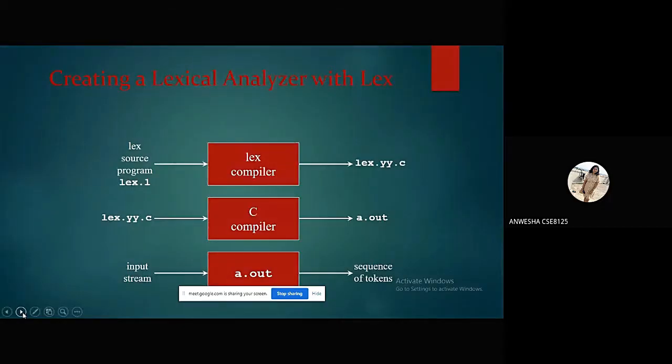We are looking at how to create a lexical analyzer with lex. This is how a lexical analyzer is created. First, the lex source program, for example, lex.l, goes into the lex compiler as the input and we get the lex C code, named lex.yy.c. That code goes as an input into the C compiler and we get the output as a.out. Then when we put the input stream, that is our token sequence or characters into the a.out, we get the sequence of required tokens as our output.